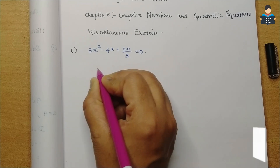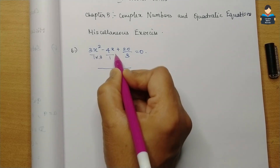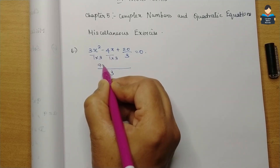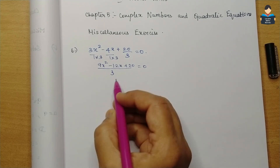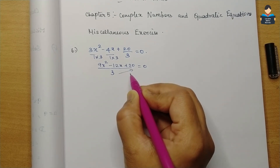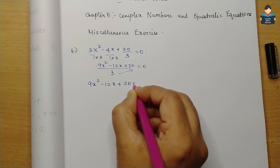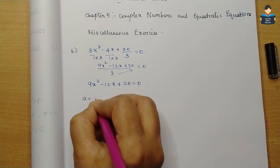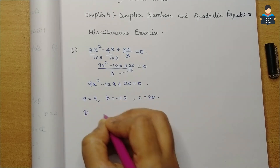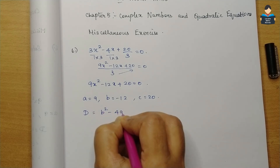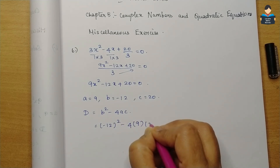Multiply through by 3, so 9x² - 12x + 20 = 0. Now identify the values: a = 9, b = -12, c = 20. First, find the discriminant D = b² - 4ac, that is b² - 4ac, which gives us (-12)² - 4 × 9 × 20.